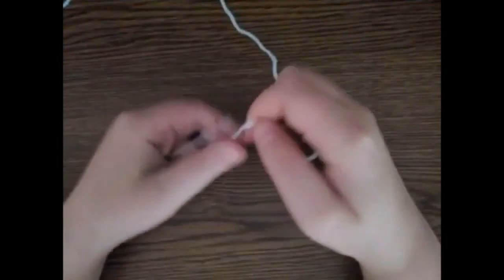Now that you understand how to hold your hook, I'm going to show you how to hold your yarn. To start, I pull a decent amount of yarn out of the skein to work with. I make a slipknot and put it on my hook.